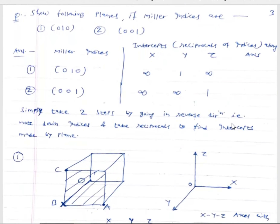Similarly, for Miller indices (0 1 0), the intercepts are infinite, 1, infinite — the reciprocals of the indices. To show this plane, take the reciprocal of the Miller indices to get the intercepts: infinite, 1, infinite. Along axis Y the intercept is 1. Mark point B along Y at full axial length. From B, draw lines parallel to X and parallel to Z. The intercepts along X and Z are infinite, so the plane is parallel to both. This gives the (0 1 0) plane.